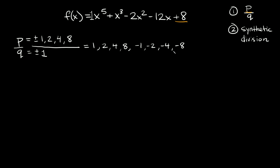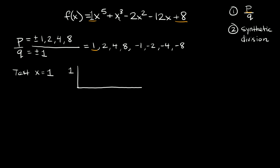So I'm just going to check this first number, positive 1 — I want to test x is equal to 1 using synthetic division. First, draw your big synthetic division symbol. Whatever x is equal to goes on the outside, and then the numbers listed on the top row are going to be your coefficients. So it's going to be positive 1. Here we skip over x to the fourth — we don't have an x to the fourth term, but we do need to include it, so we put a 0 for x to the fourth.